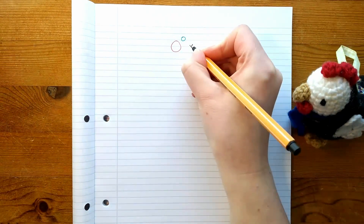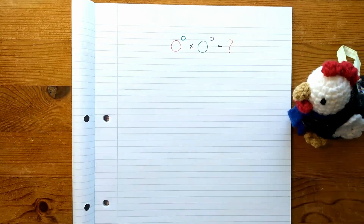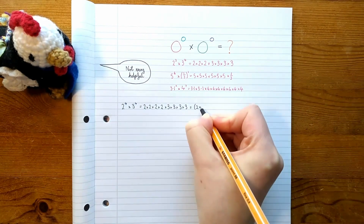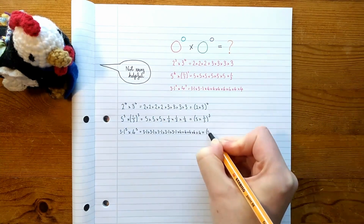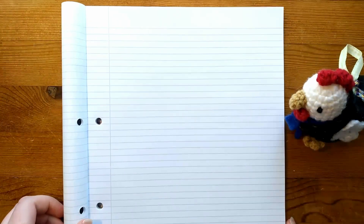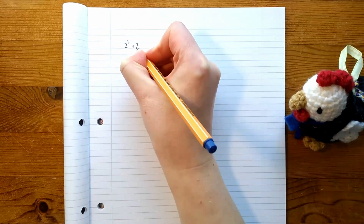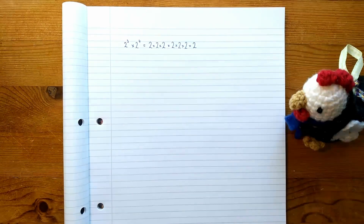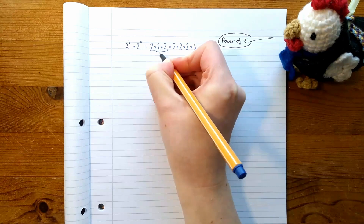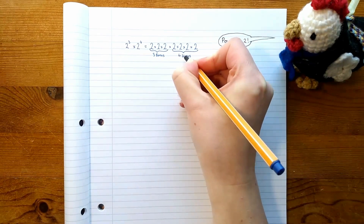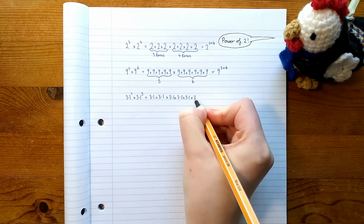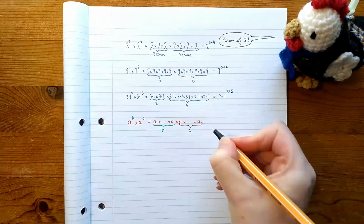Powers are built from multiplication, so maybe we should ask what happens if you multiply numbers with powers together. If the numbers at the bottom are the same, it simplifies nicely. So 2 to the 3 times 2 to the 4 equals 2 times 2 times 2 times 2 times 2 times 2 — that's a power of 2. There are 3 twos here and 4 twos here, so that makes 2 to the power of 3 plus 4. We should check a few more examples and work through the algebra just to be sure. So we've got our first rule for indices.